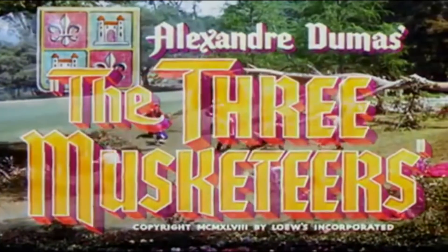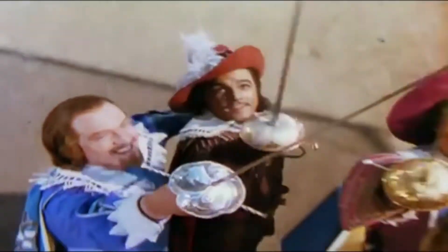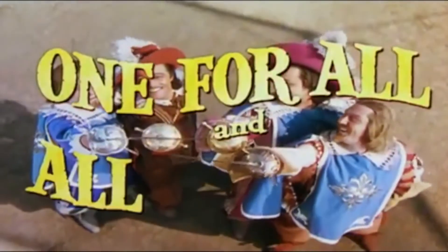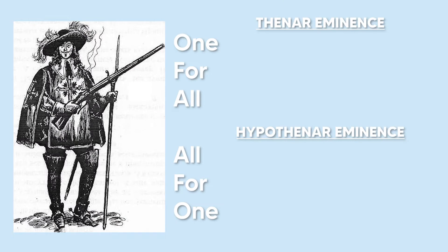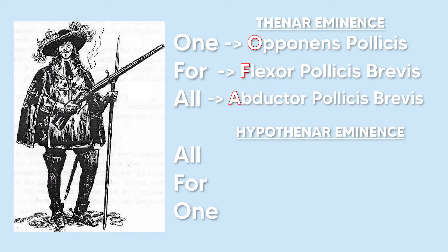Now the easiest way to remember all the muscles of the two different eminences is with the mnemonic one for all and all for one. So for example, one for all could stand for the opponens pollicis, the flexor pollicis brevis, and the abductor pollicis brevis.